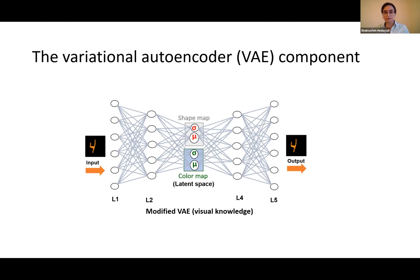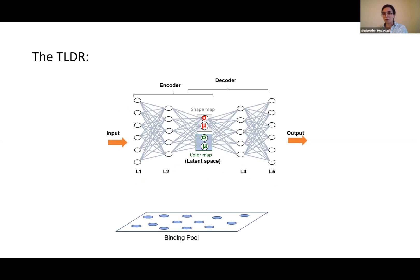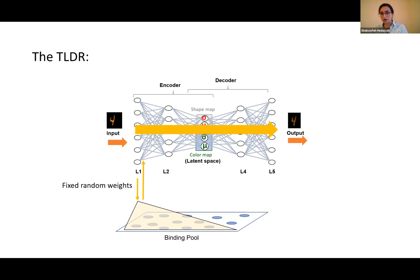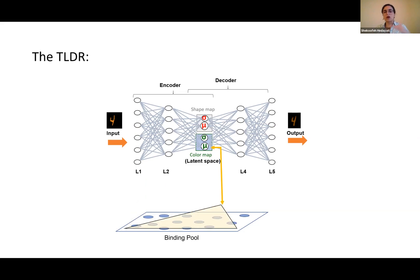This is the architecture of the whole model and how it interacts with the binding pool. The upside is the visual knowledge or the modified VAE, on the bottom is the binding pool. Imagine that this image, a handwritten four, comes into the model. It generates activations in layer one, and this activation is projected through fixed random weights to the binding pool. Then with an inverse multiplication, it goes back to L1 and is reconstructed through the model. This is how the reconstruction is. We tested this with different layers, with L2, projecting to the binding pool and reconstructing, also color and shape maps, to see which one has better efficient reconstruction.